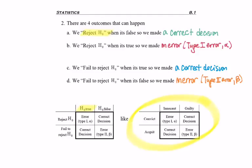People understand it a lot more if you think of the court system. So imagine you have an innocent person. If you convict them, you just made an error. If you acquit them, you made the correct decision.